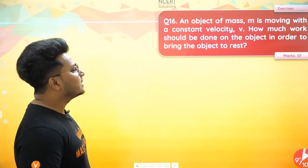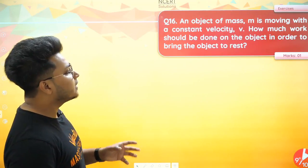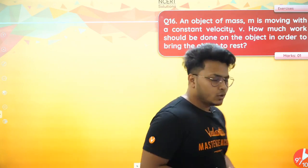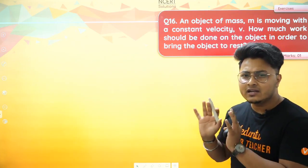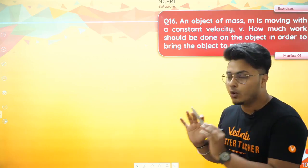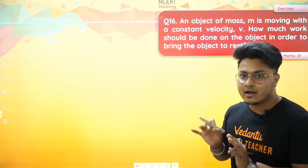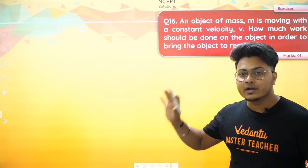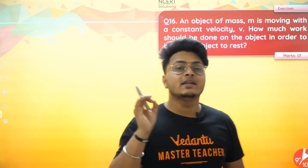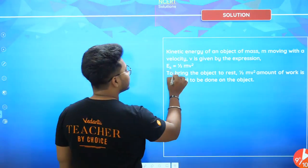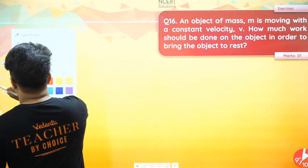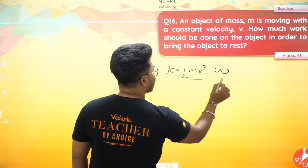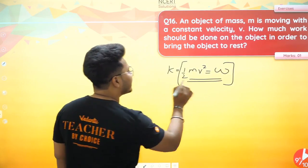Question 16: An object of mass m is moving with a constant velocity v. How much work should be done on the object in order to bring it to rest? To stop the object, we need to do work at least equal to the kinetic energy of that object. The kinetic energy of that object is equal to half mv², so the work done required is equal to half mv².